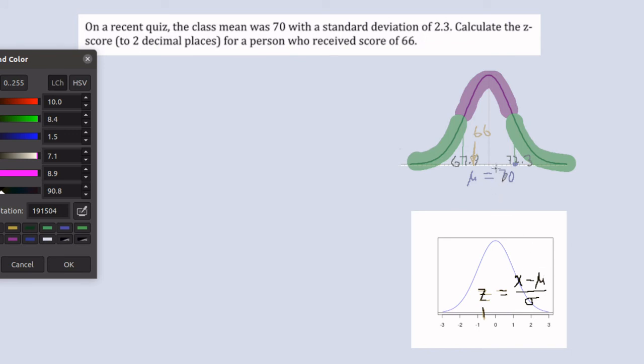The z-score is x minus mu divided by the standard deviation. What it's really doing is counting how many standard deviations it is away from the mean. Now remember this standard deviation was given to be 2.3. So now that's an easy calculation to do.